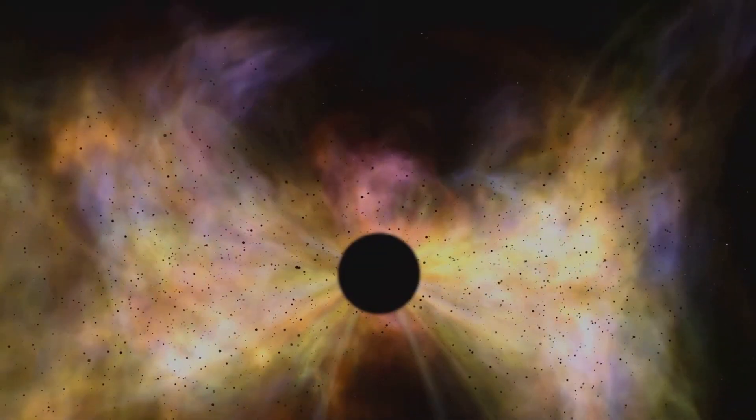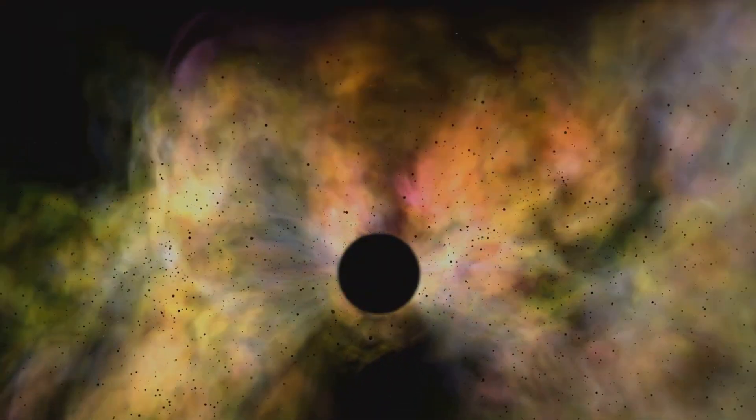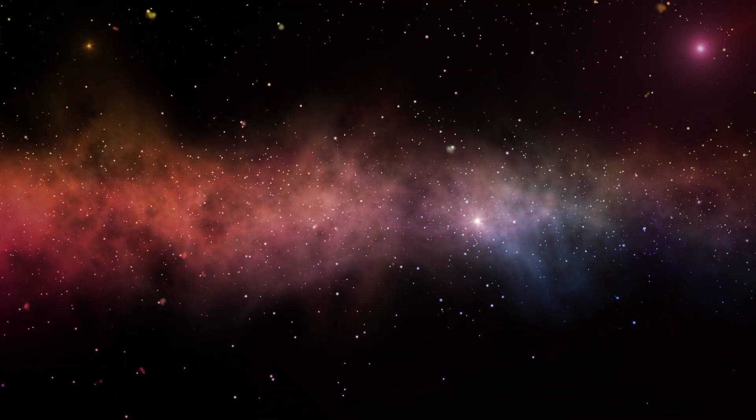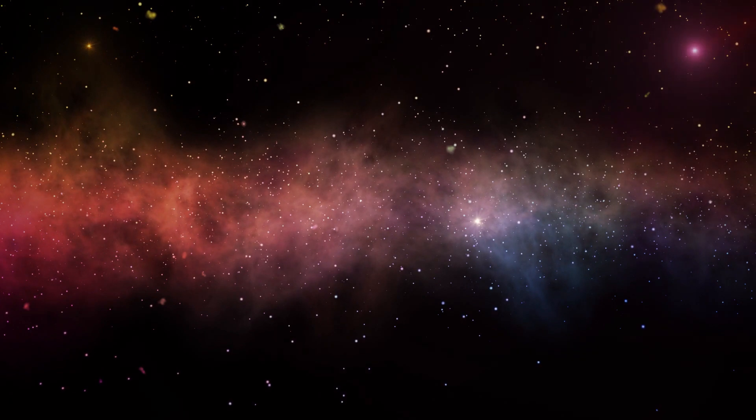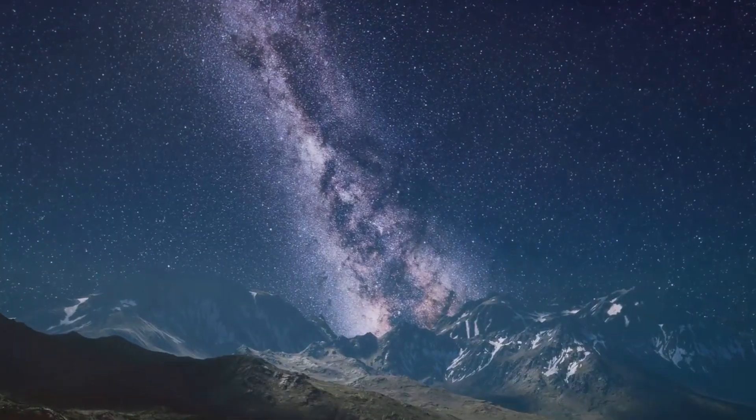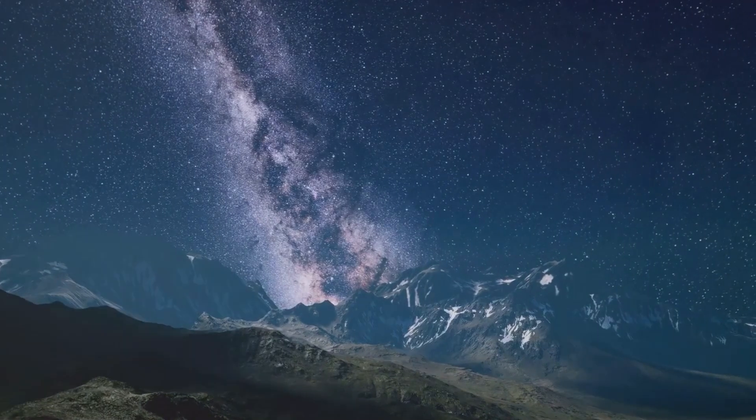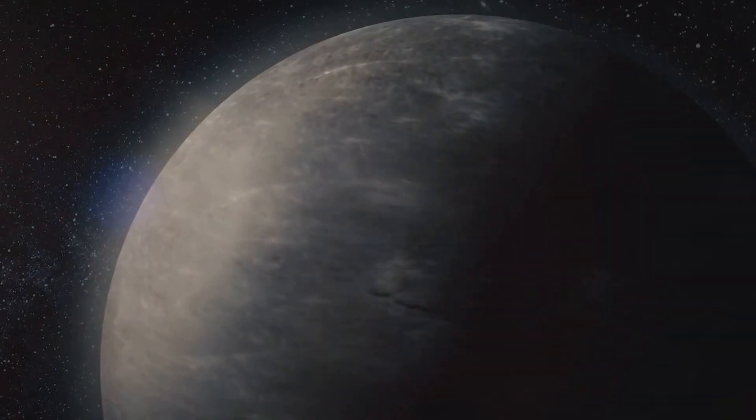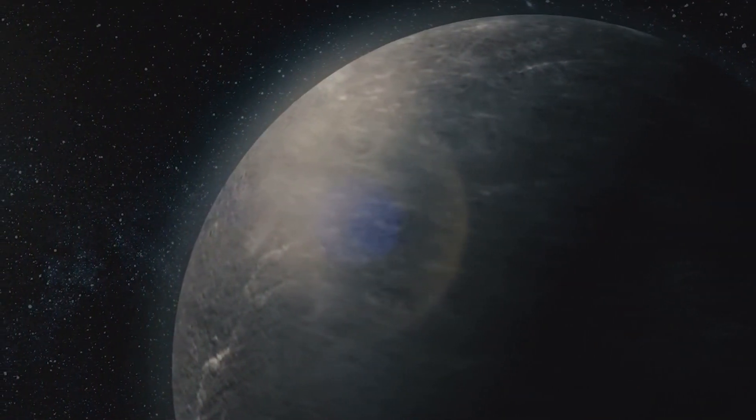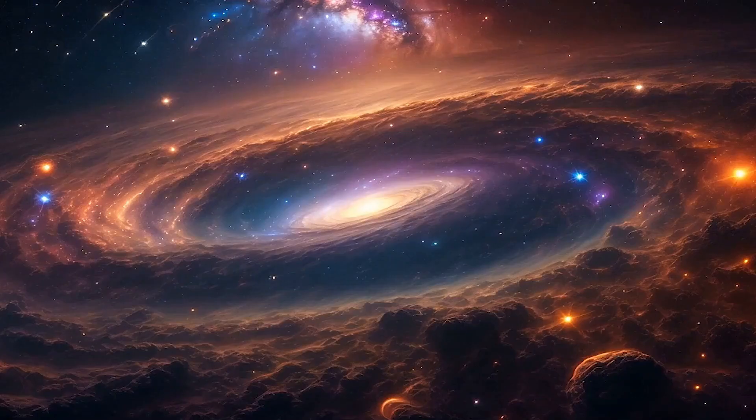But perhaps the most intriguing aspect of the Milky Way's outer regions is the halo of dark matter that envelops the galaxy. This invisible, mysterious force is like a cosmic glue holding the galaxy together. It's a force we can't see or touch, but its effects are undeniable. Without it, our galaxy would fly apart, its stars scattered across the universe. The outer reaches of the Milky Way are a place of stark beauty, a realm where the cosmic dance of stars and galaxies unfolds in slow motion. It's a place where we can glimpse the past, see the future, and marvel at the sheer scale and complexity of the universe. Even at its edges, the Milky Way is a marvel, a testament to the wonder and complexity of the universe.